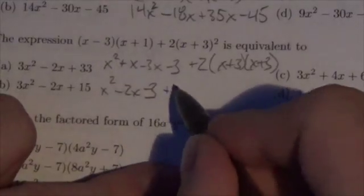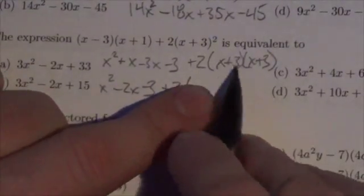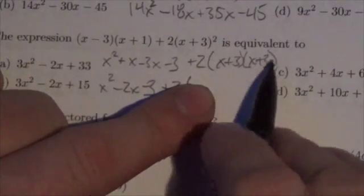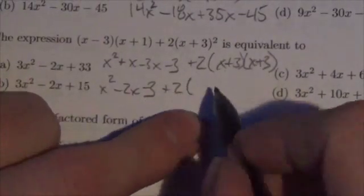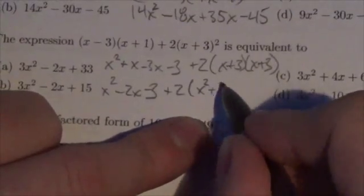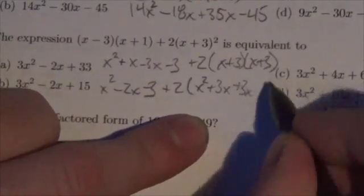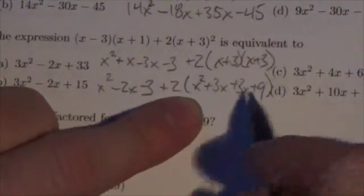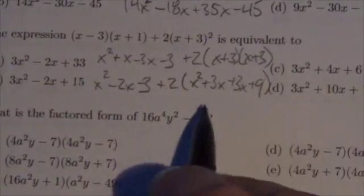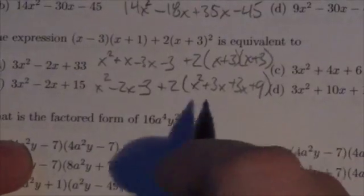So this is going to be plus 2 times—what I have to do is I have to distribute both terms here by both terms here. So x times x is, in fact, x². That is true. x times 3 is going to be 3x. 3 times x is 3x. 3 times 3 is 9. So yes, there is an x². Yes, there is a 9, but actually there's two 3x terms in there which combine to give you a 6x.